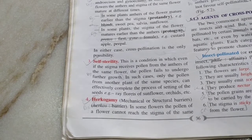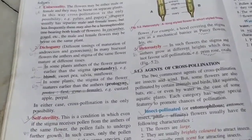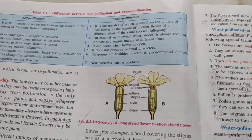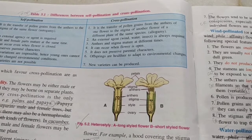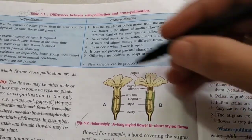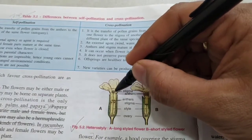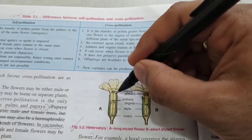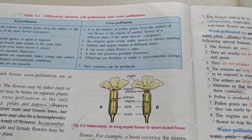The next contrivance is herkogamy — a mechanical or structural barrier. In certain plants like pansy, some varieties may have a hood over their stigma, making self-pollination impossible. That is called herkogamy.